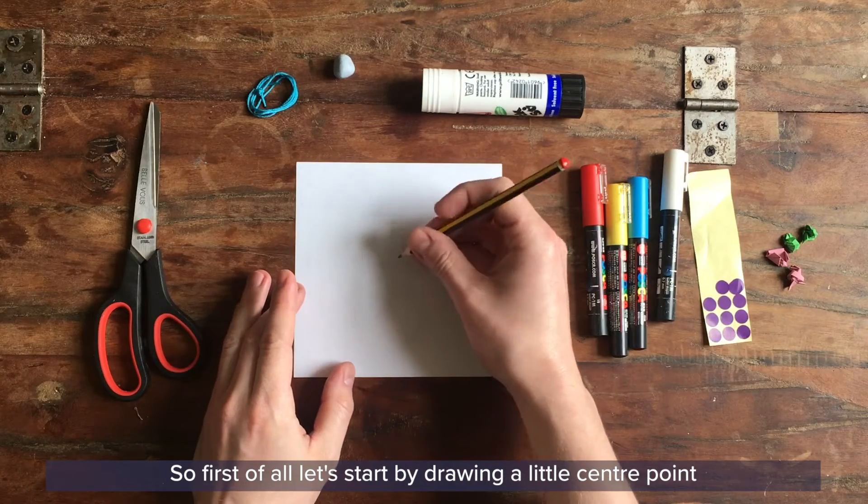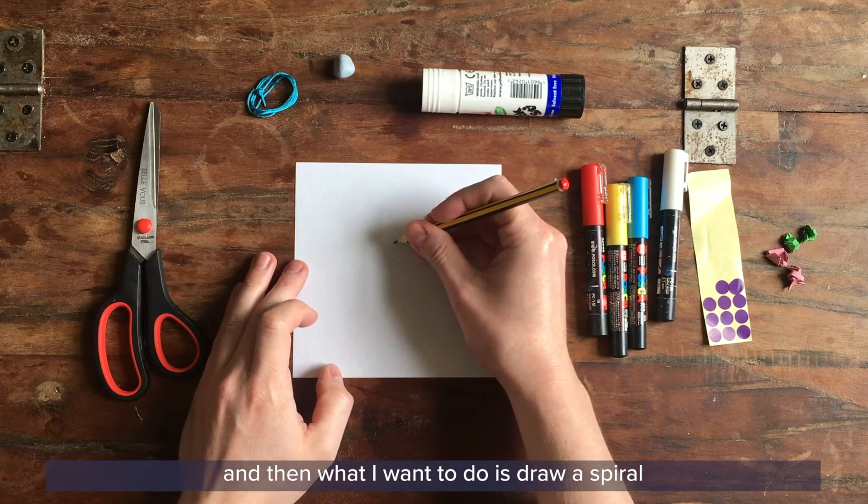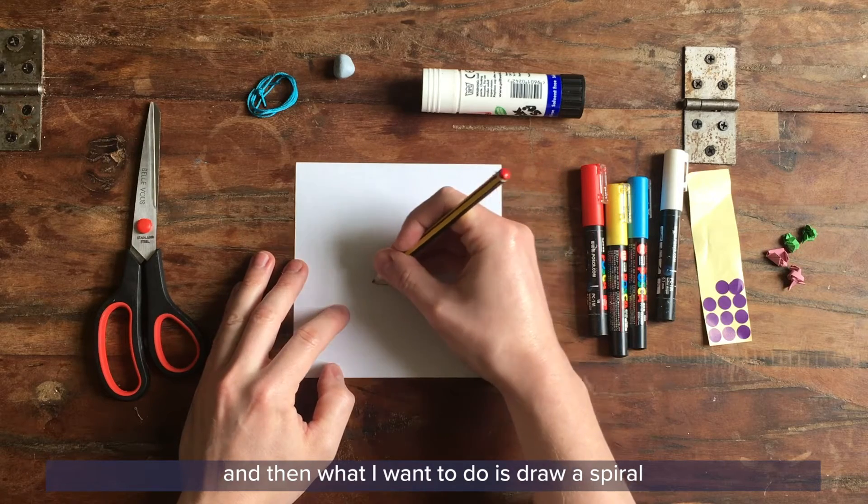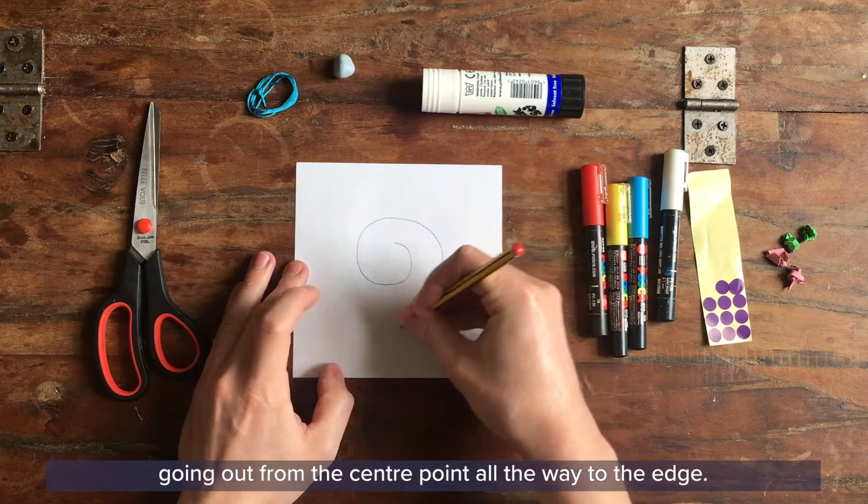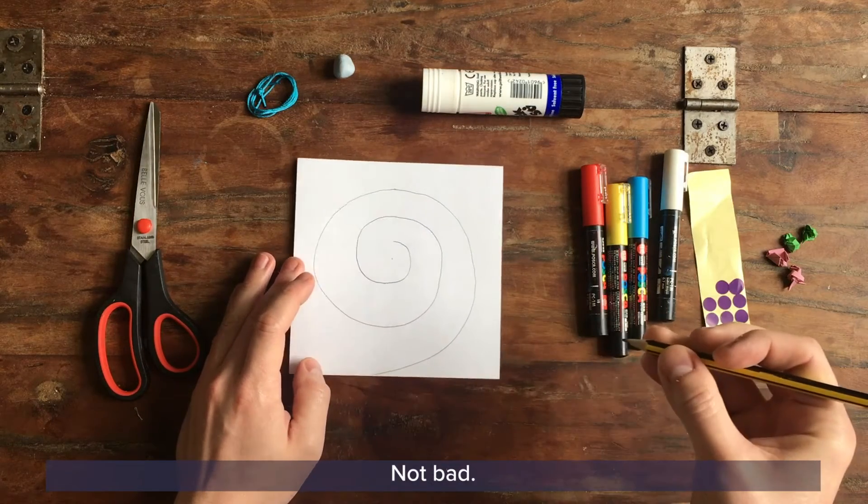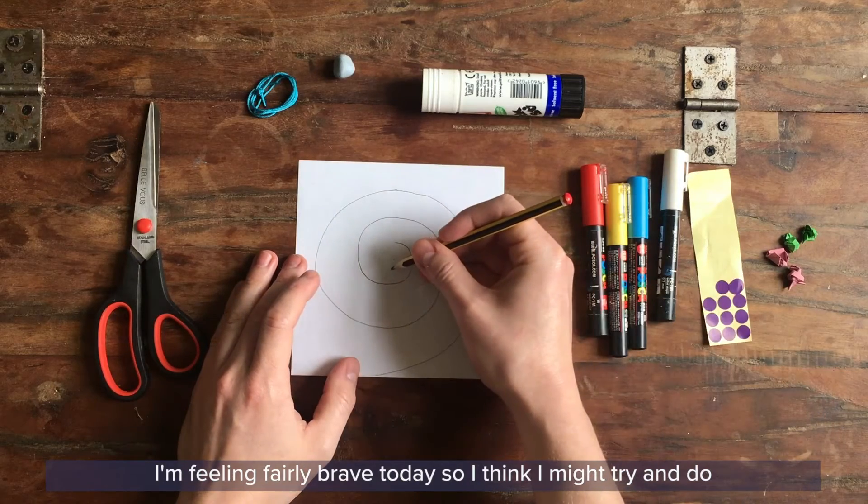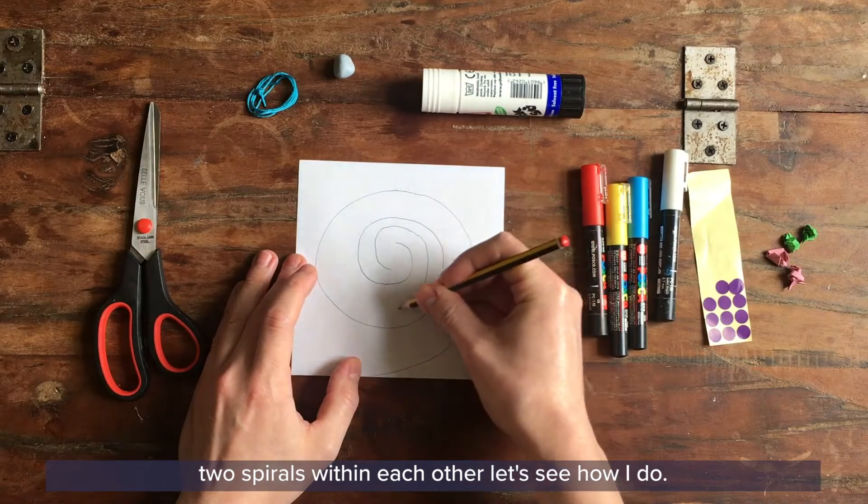So first of all let's start by drawing a little center point so it gives me a reference and then what I want to do is draw a spiral going out from that center point all the way to the edge. Not bad. I'm feeling fairly brave today so I think I might try and do two spirals within each other. Let's see how I do.